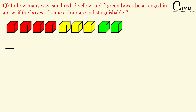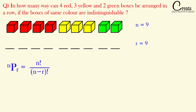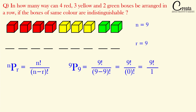Here N and R are both equal to each other. So if we apply the permutation formula N factorial upon N minus R factorial, we get 9 factorial upon 0 factorial, and since 0 factorial equals 1, we get the number of ways as 9 factorial. Since N equals R, we can apply the direct formula N factorial. Here N is 9, so the permutation is 9 factorial. Further, we have 4 red boxes which are the same, 3 yellow boxes which are the same, and 2 green boxes which are also the same. So our answer will be 9 factorial upon 4 factorial into 3 factorial into 2 factorial.